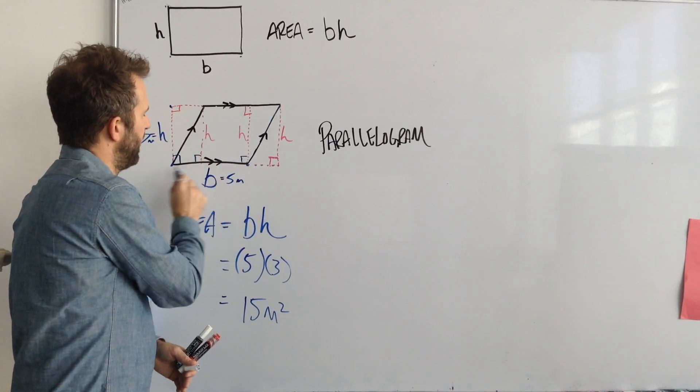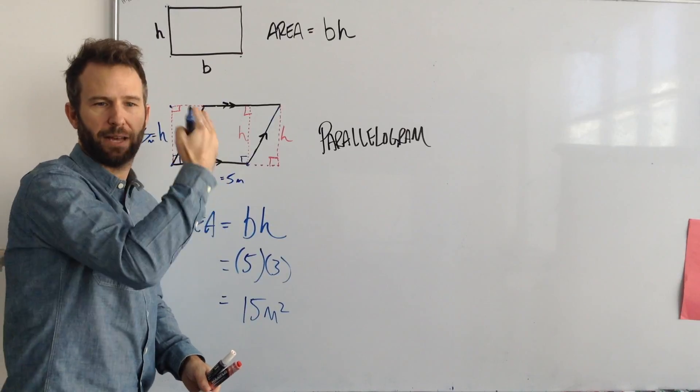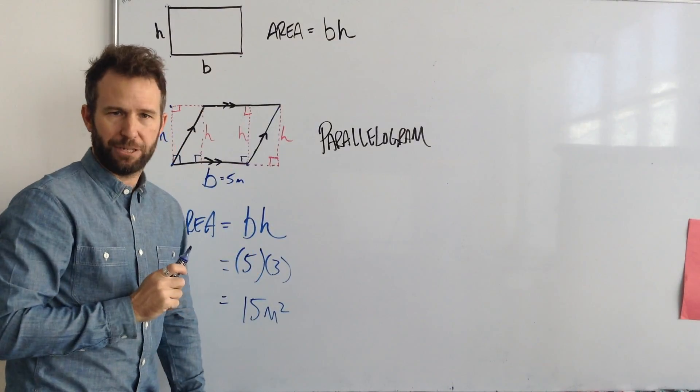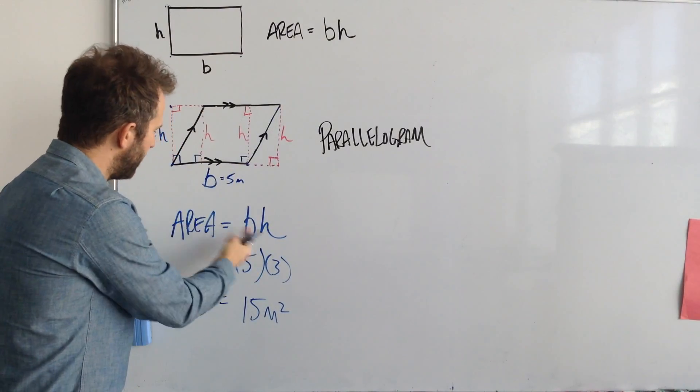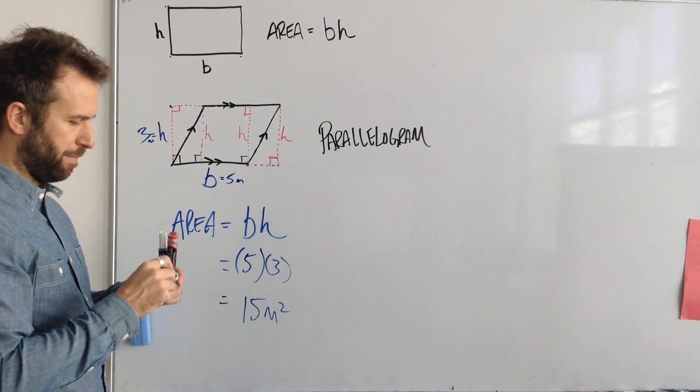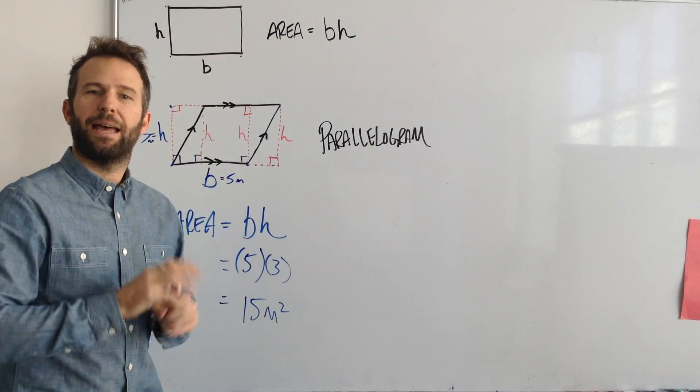So wherever you define your base, it has to be a perfect right angle up. That's what makes the h here. So that's how we end up working on a parallelogram's area. Thank you.